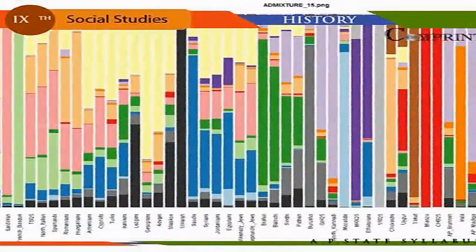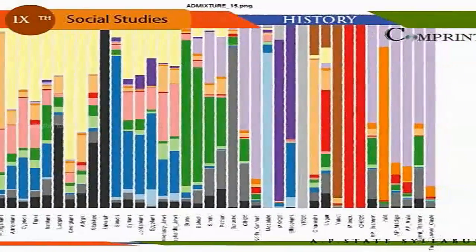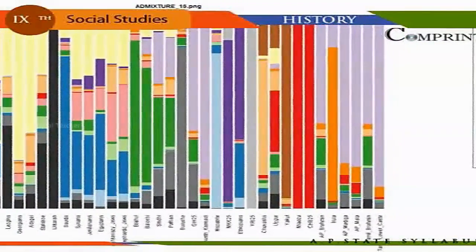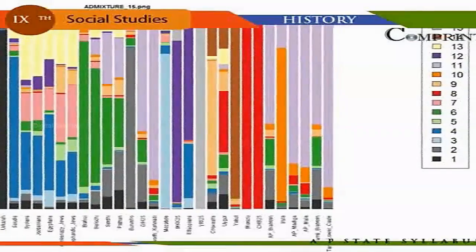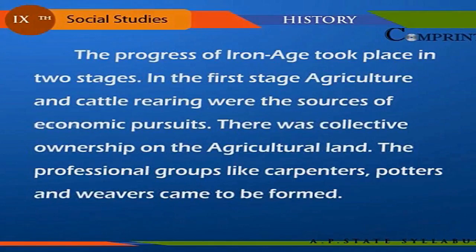Early Iron Civilization in India: With the advent of Indo-Aryans, the use of iron became widespread in the Gangetic Valley, and ancient kingdoms were established in this region. The progress of the Iron Age took place in two stages. In the first stage, agriculture and cattle rearing were the main sources of economic pursuits, and there was collective ownership of agricultural land.